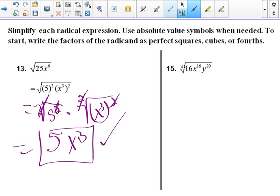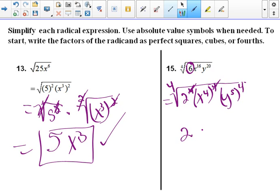And over here, we can rewrite 16 as 2 to the 4th power. And then we can write the x to the 4th power, because 4 times 4 is 16, right? And we can write y to the 5th power to the 4th power. So everything's in the 4th power. So now this cancels out. So we have 2x to the 4th, y to the 5th. And that's your answer.